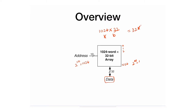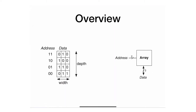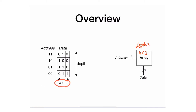Let's see an example of how we can actually access memory, starting with a read. I have a very small array here for simplicity — it has four rows and three columns, so it's a 4×3 array. Sometimes these dimensions have different terms: the number of rows in a memory array is called depth, and the number of bits for each word is called width. So in this case, depth is 4 and width is 3.